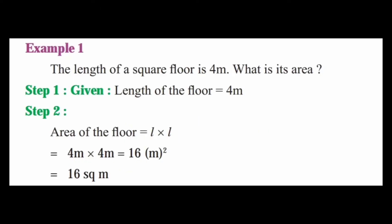Let us see some examples. Example 1: The length of a square floor is 4 meters. What is its area? Step 1 - given: length of the floor is equal to 4 meters. Area of the floor is equal to length into length, that is 4 meters into 4 meters, that is equal to 16 meter square. So the area of the floor is 16 square meters.